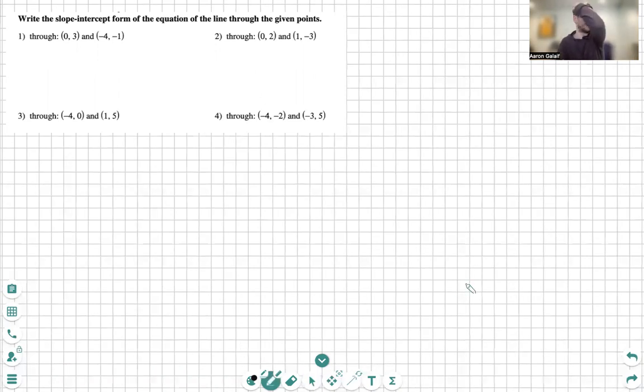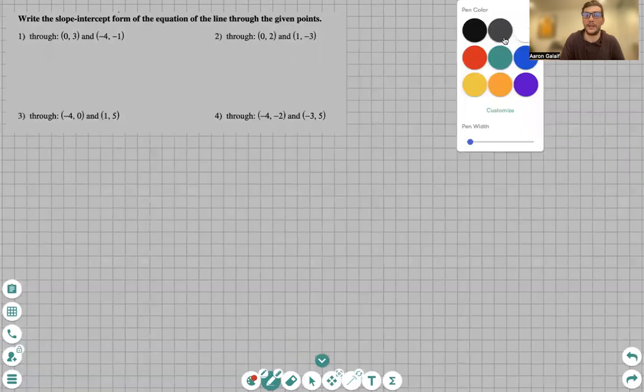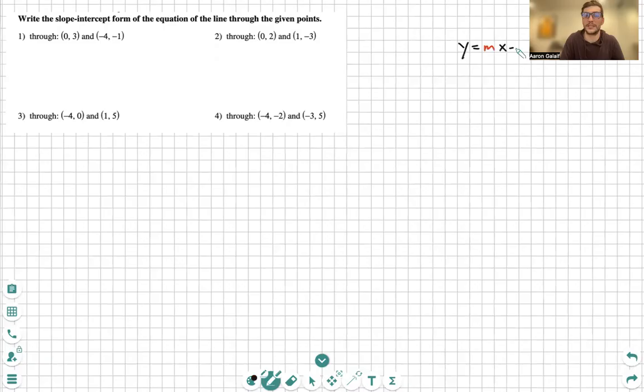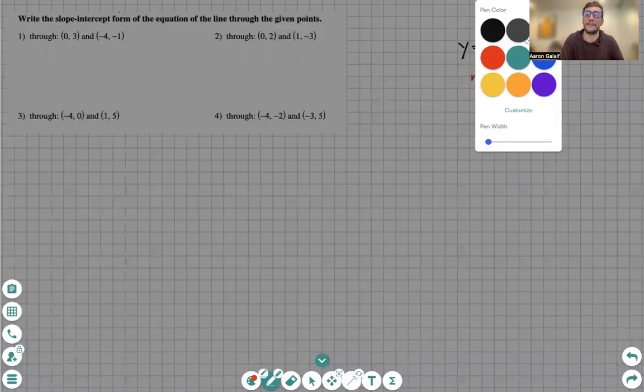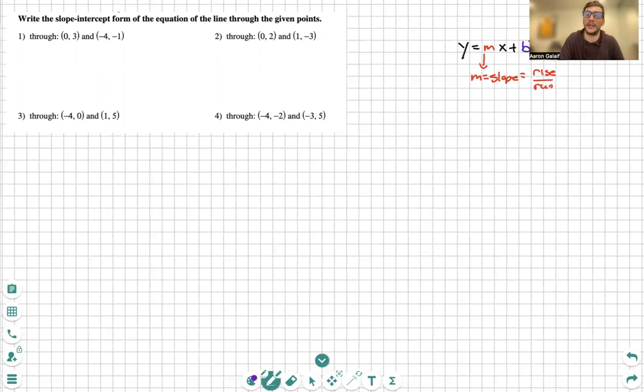So first and foremost, the first thing we need to understand is what is our goal? Our goal is to use those points on the left and we are going to get them in y equals m x plus b. What does m represent in this form? Well, we already know. My m is my slope, which is also rise over run. My b is my y-intercept.